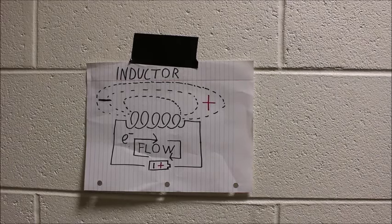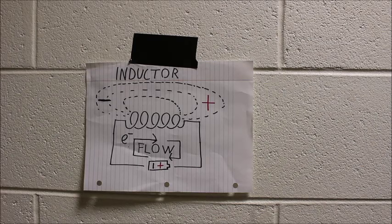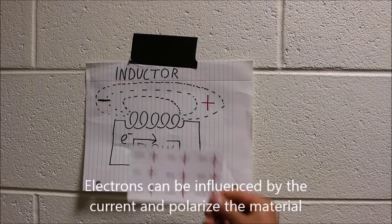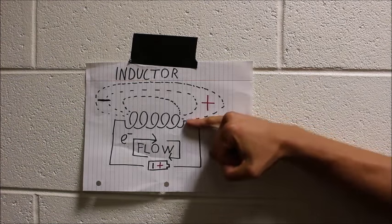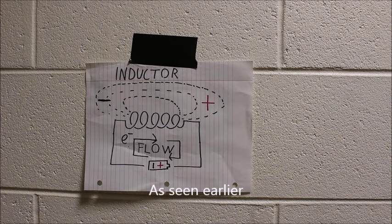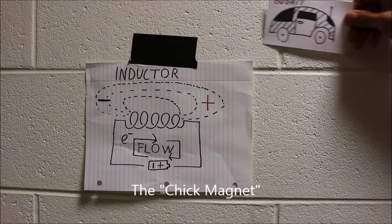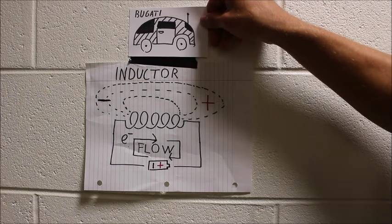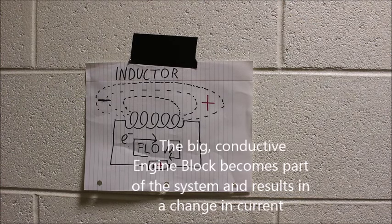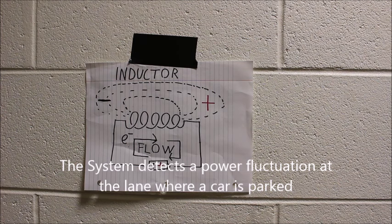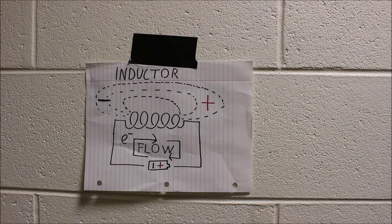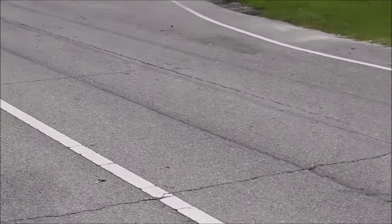When we add a conductor to the system it has free-floating electrons, so it has the ability to amplify the magnetic field, and the most efficient way to do it is to put it directly in the center of the coils. Now, you can't really fit a car in there — but you can park a car right over top of it, and when you do that you introduce the conductive material to the system and increase the power draw. That is how your car is detected: a stoplight uses long inductors inside the asphalt to detect whether a car is present or not.